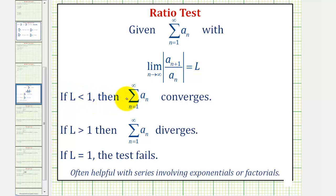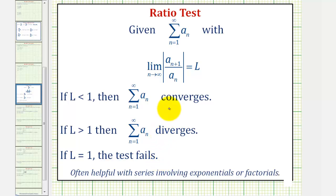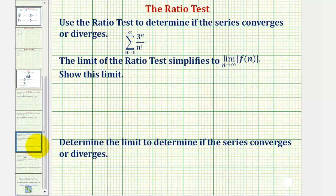If L is less than one, then the infinite series converges. If L is greater than one, then the infinite series diverges. And if L equals one, the test fails and we have to try a different test. The ratio test is often helpful when the series involves exponentials or factorials. Going back to our example, notice how our series involves both an exponential and a factorial.